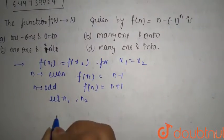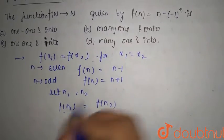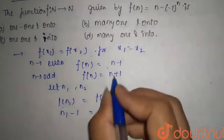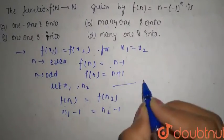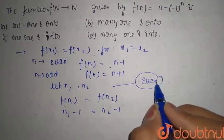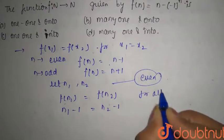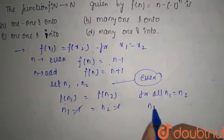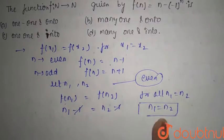We say that f(n1) equals f(n2). For even numbers, this gives n1 minus 1 equals n2 minus 1. This is only possible when both are even numbers. The ones cancel, giving n1 equals n2. So yes, if both are even, the function is one-one.